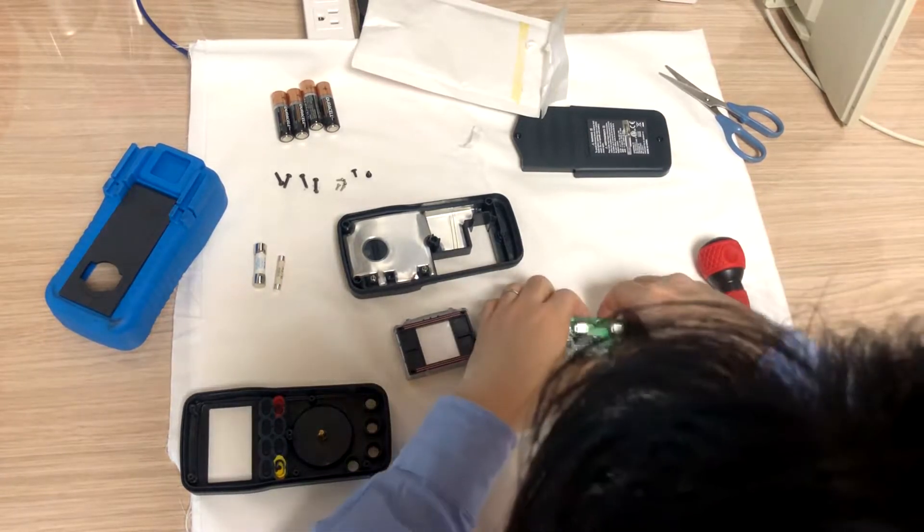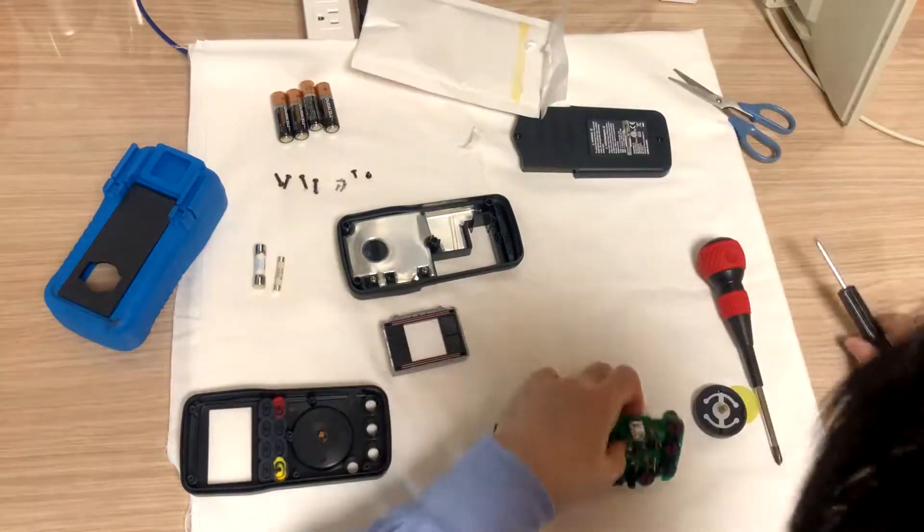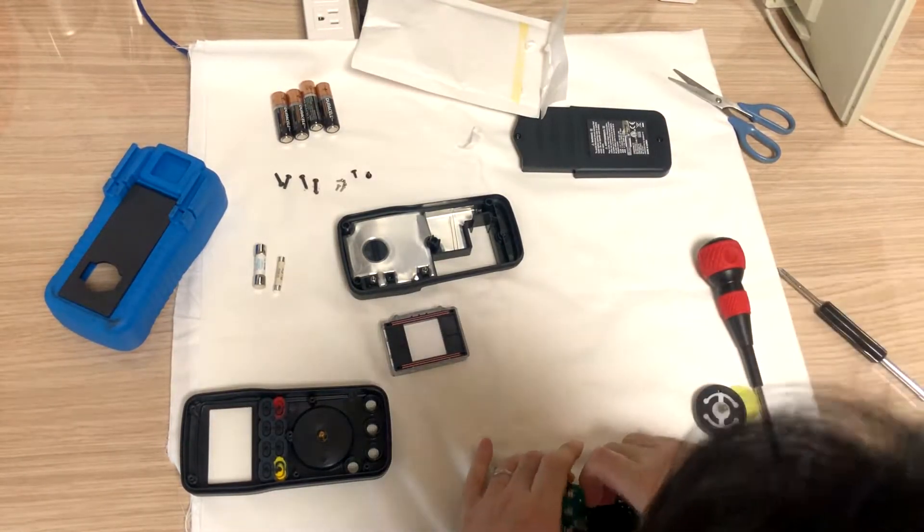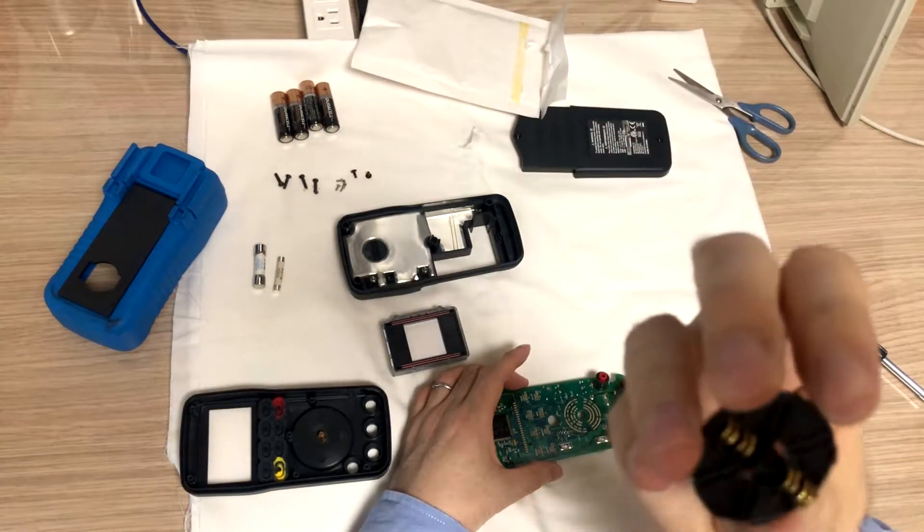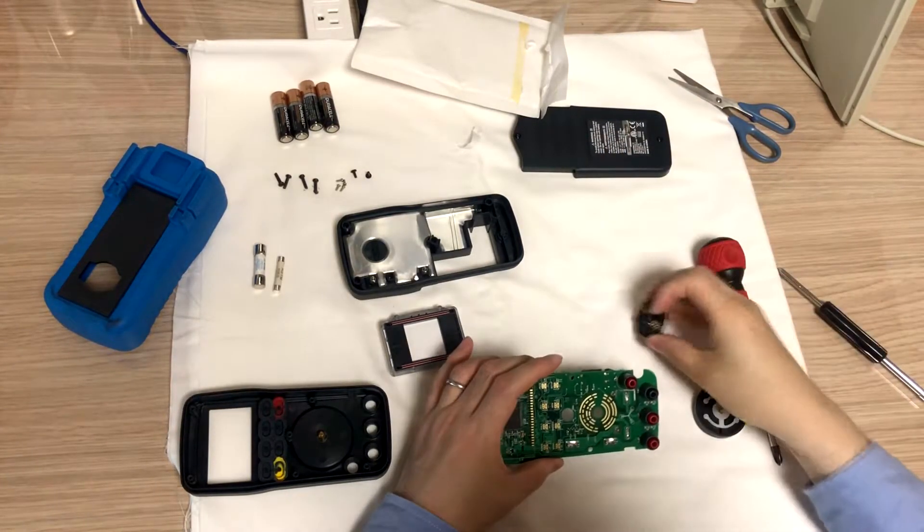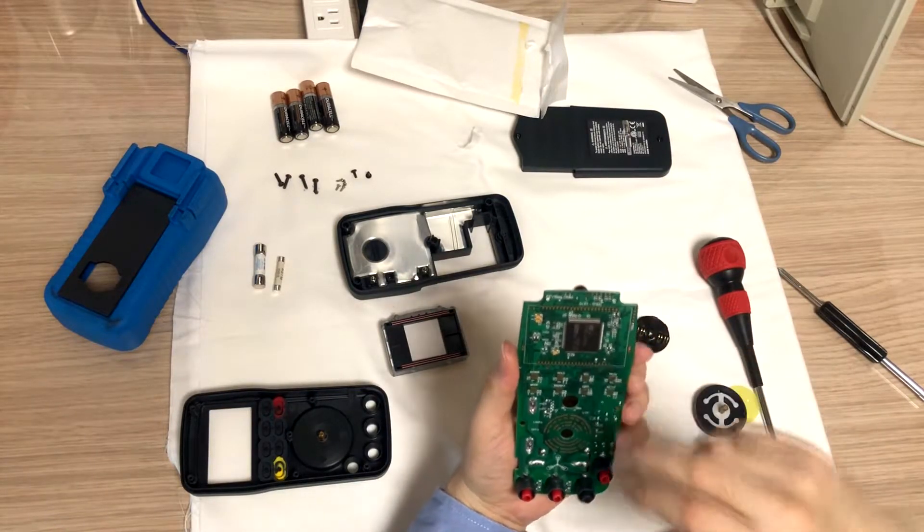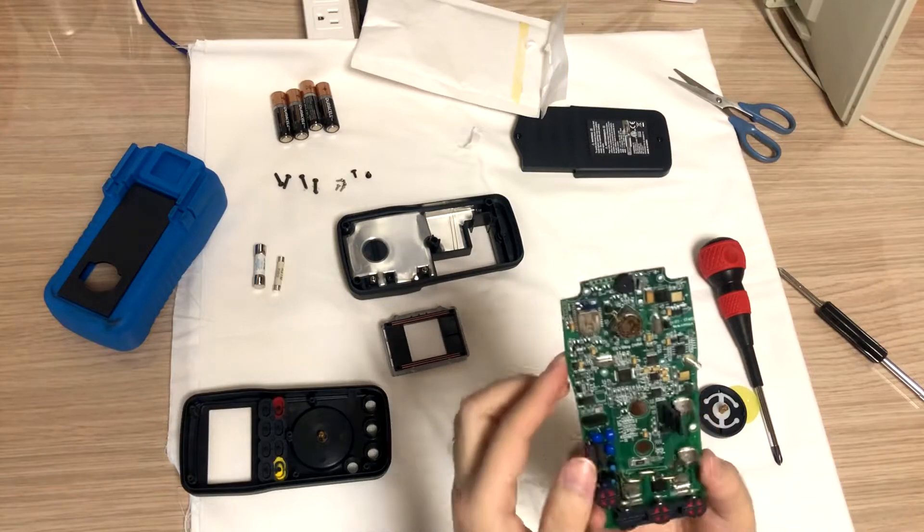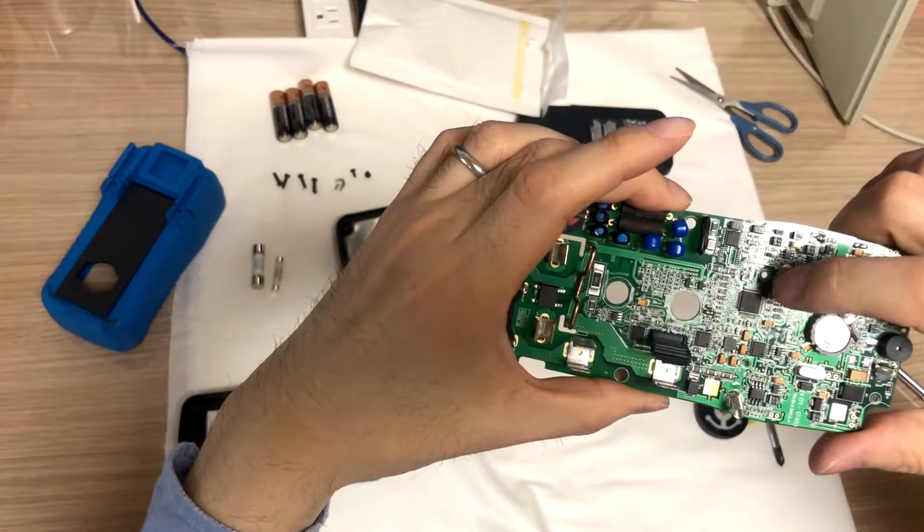Rotary switch - rotary contacts or whatever, wiper contacts, whatever it's called. And this is the rotary switch. And almost nothing other than the main CPU, and this is probably the chipset.